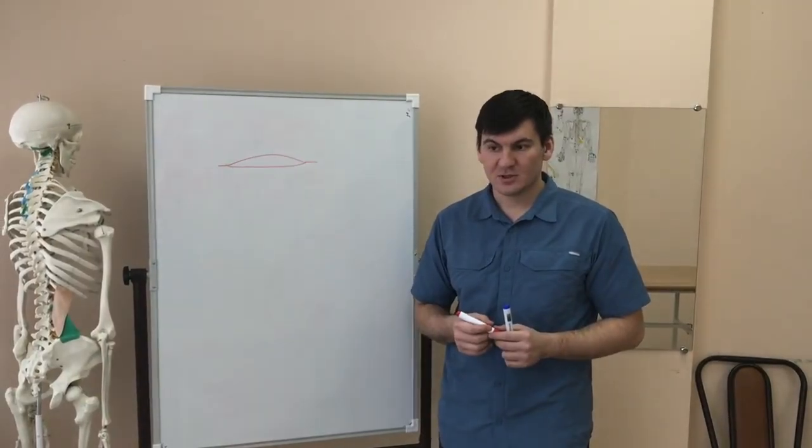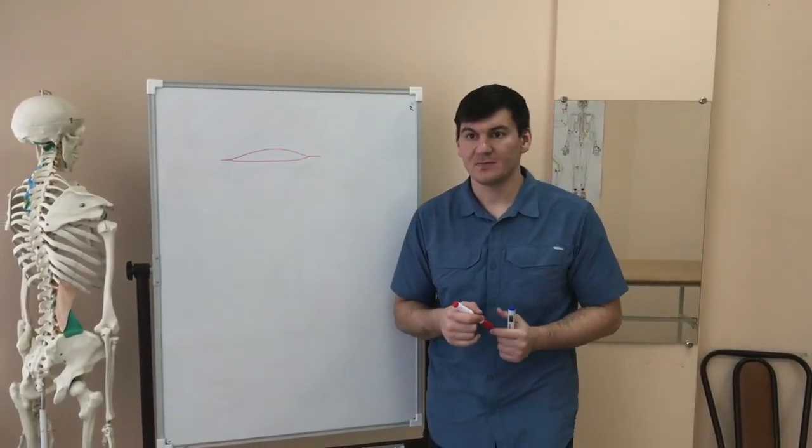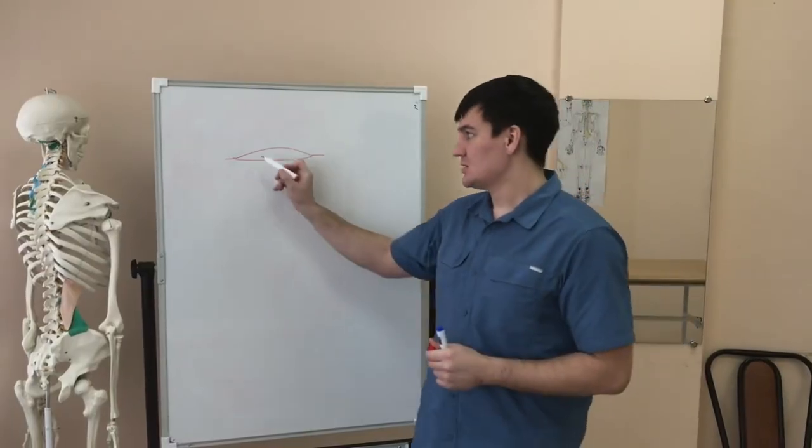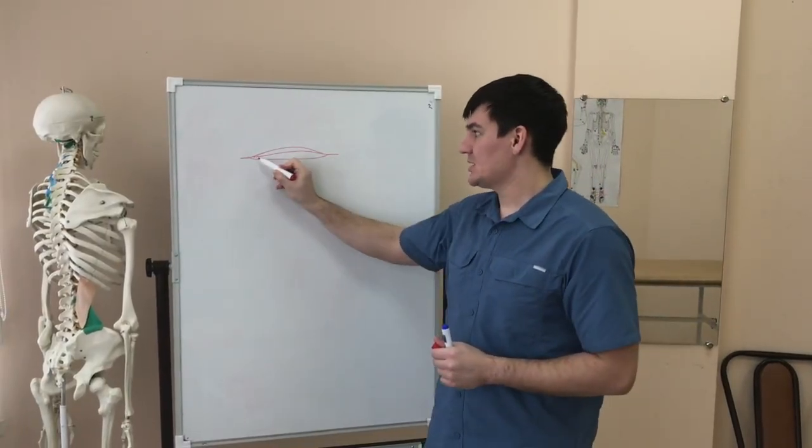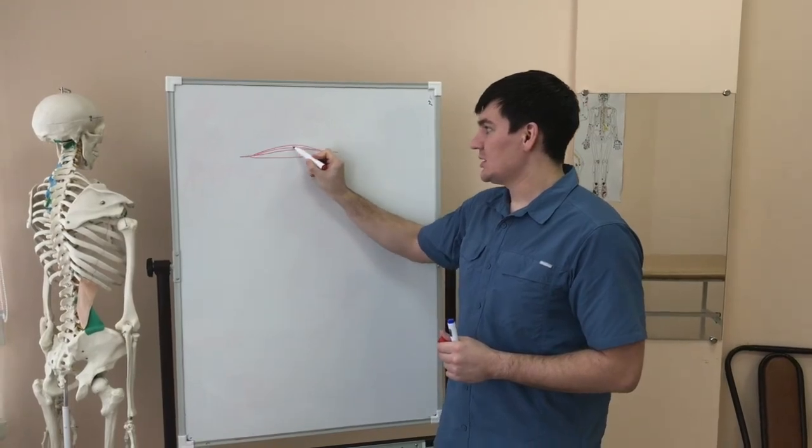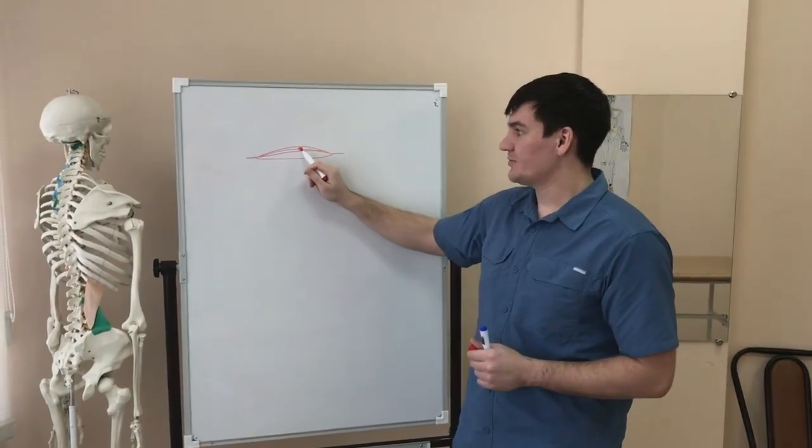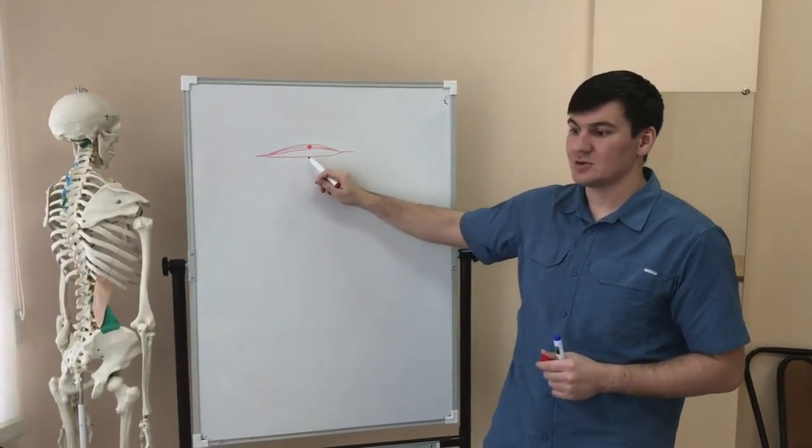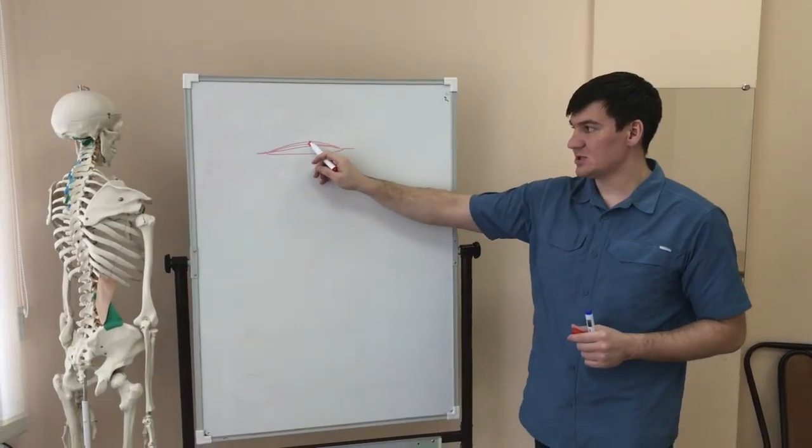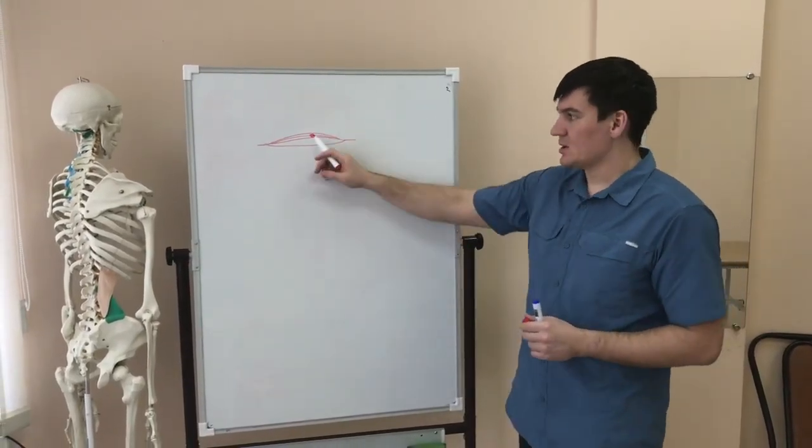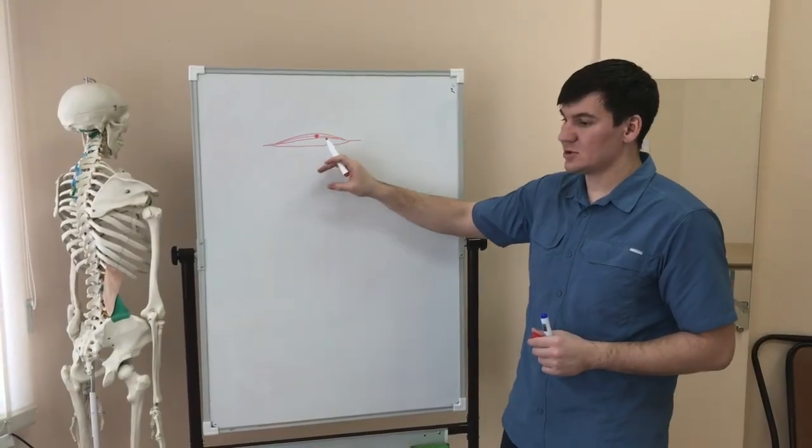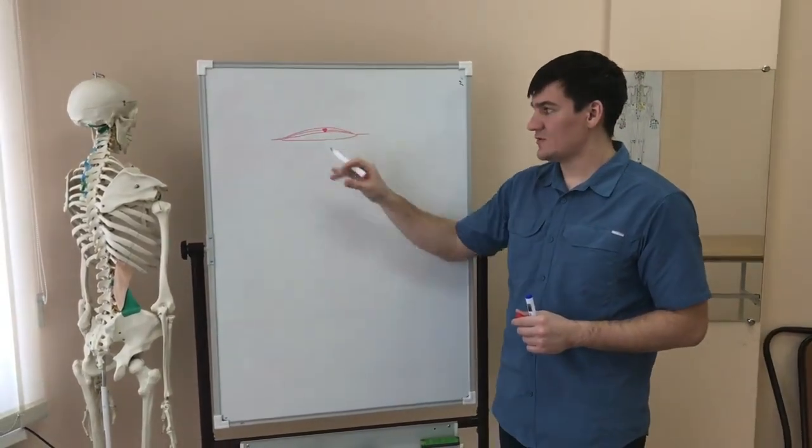But it can manifest not only in the form of a local spasm area that combines several muscle fibers. And in a certain place, they maintain their constant tension. Here, a trigger point is formed, which causes pain, gives a sensation of tension, and disrupts the function of the muscles.